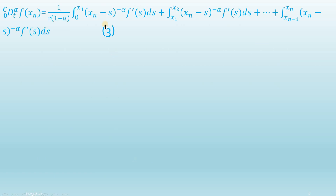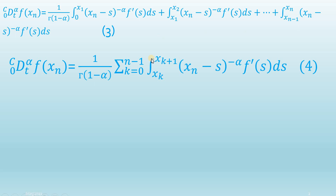In equation 3, the first integral is from 0 to x_1, the second integral is from x_1 to x_2, and we keep going. The last integral has limits from x_{n-1} to x_n. Next, I will combine all of these integrals using a summation notation where the index k starts from 0 and ends at n minus 1.